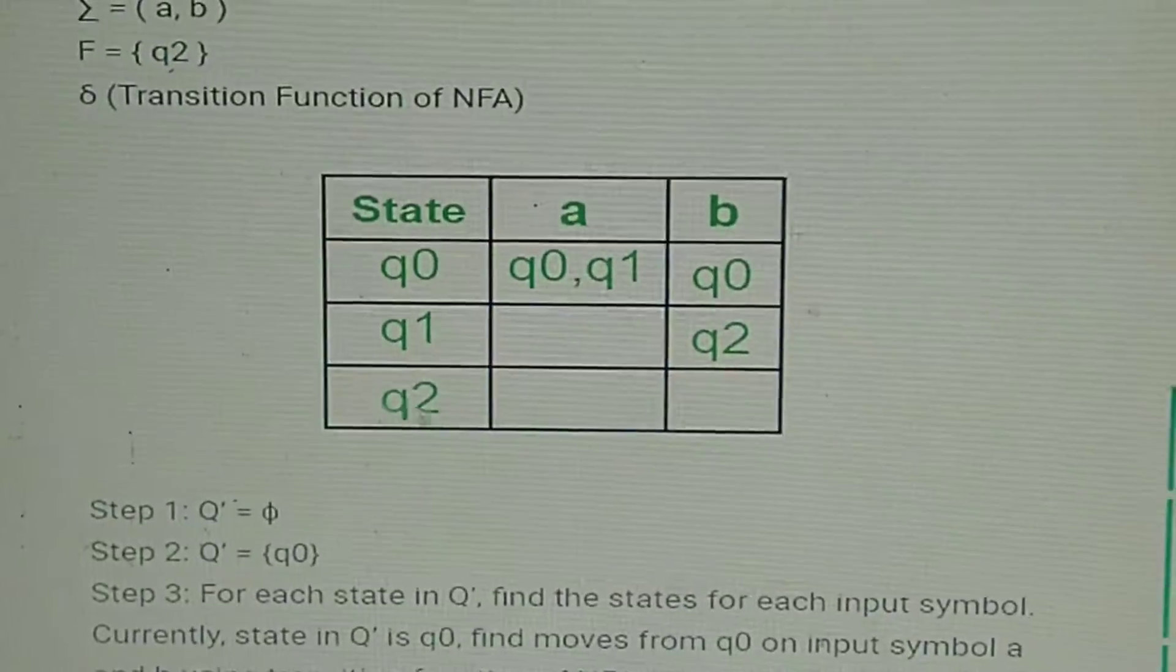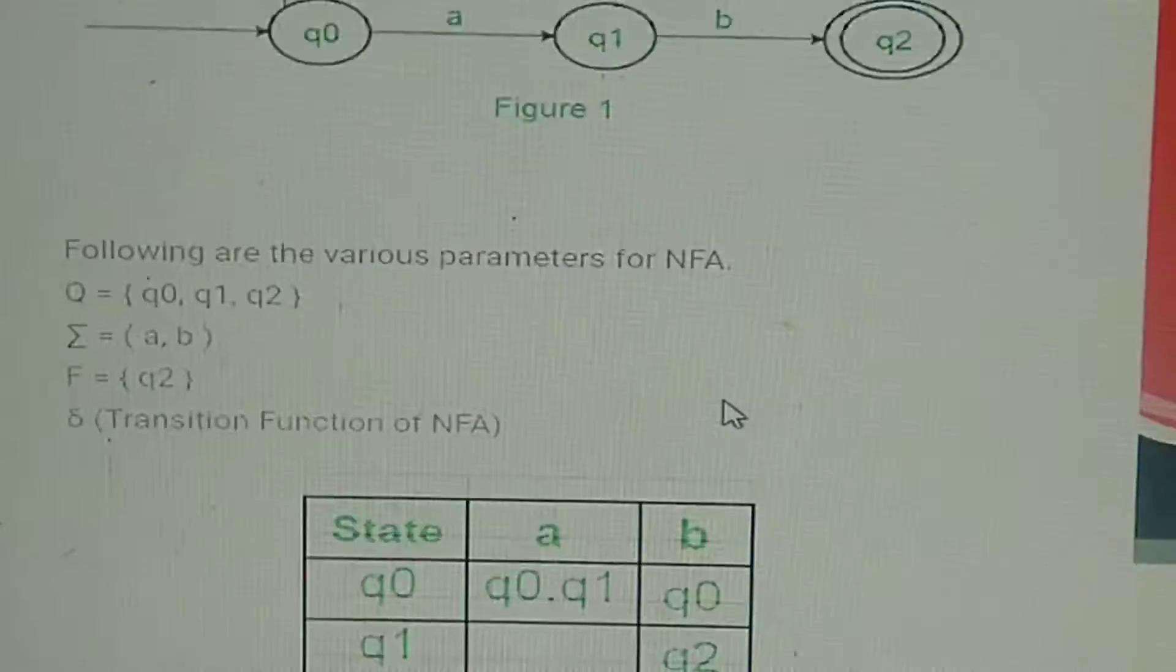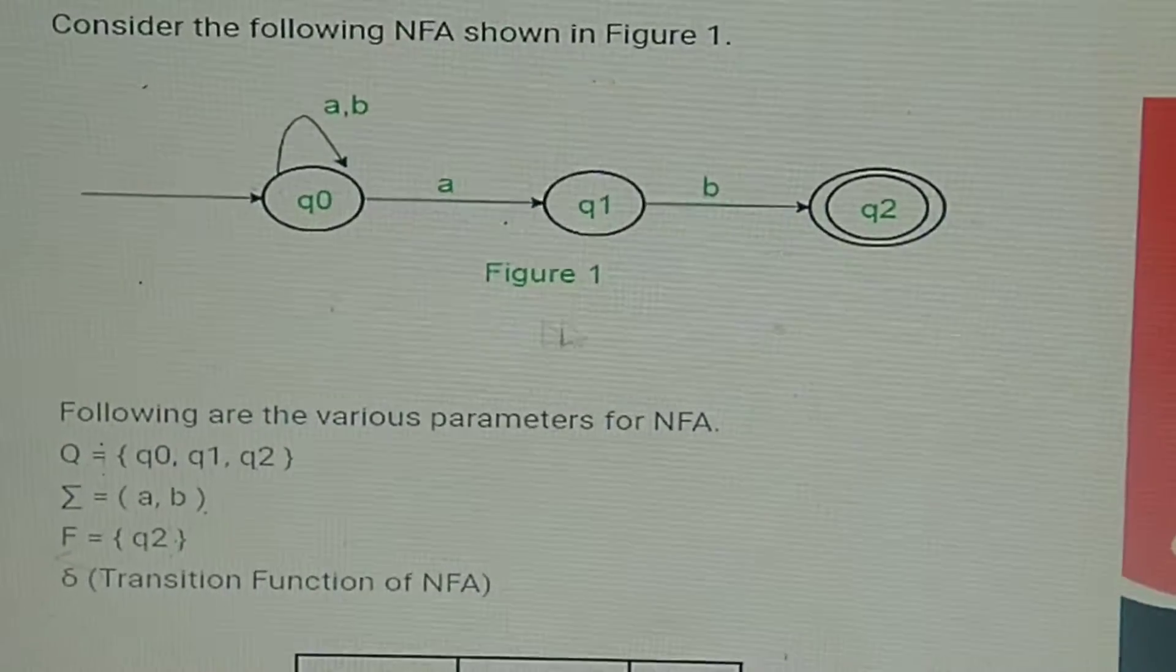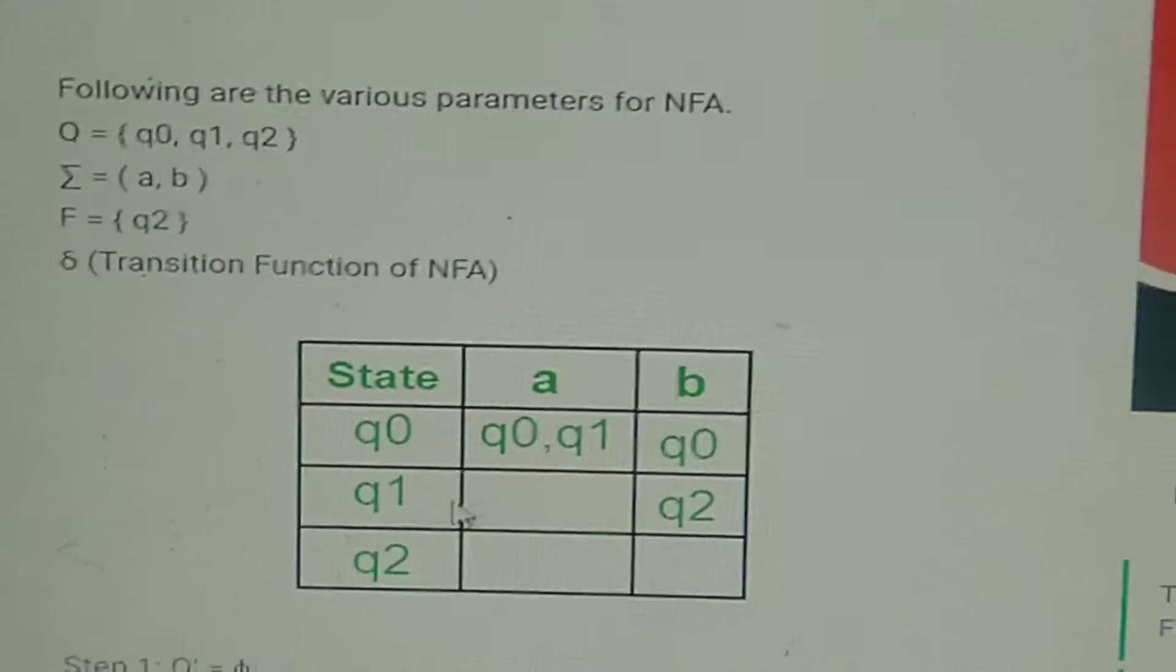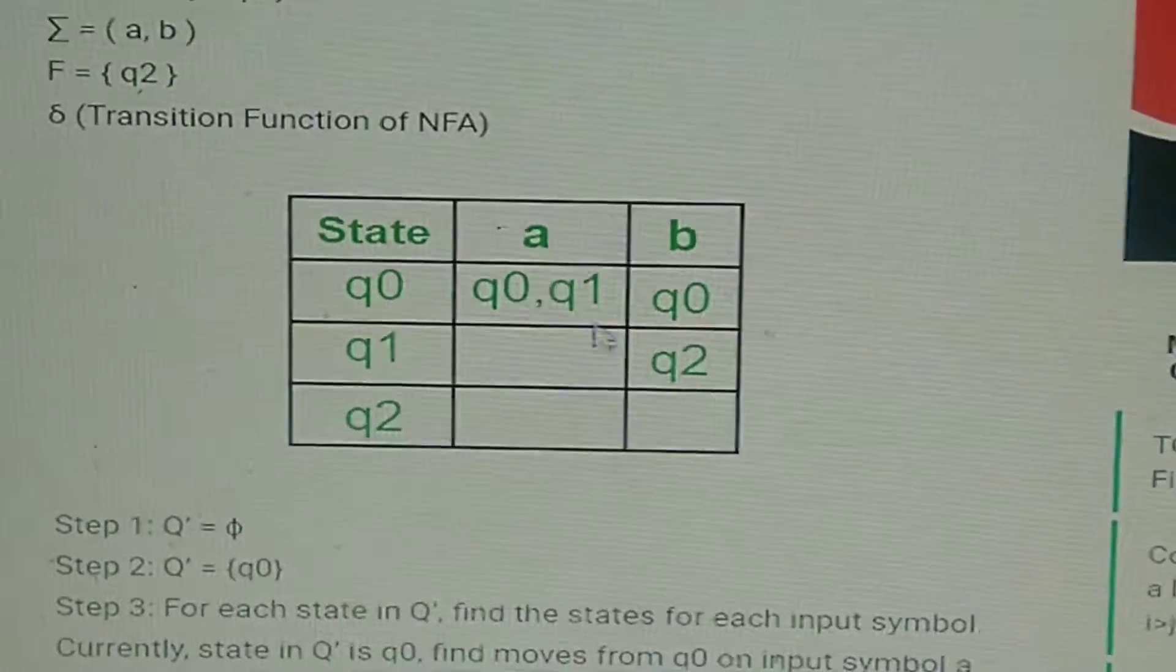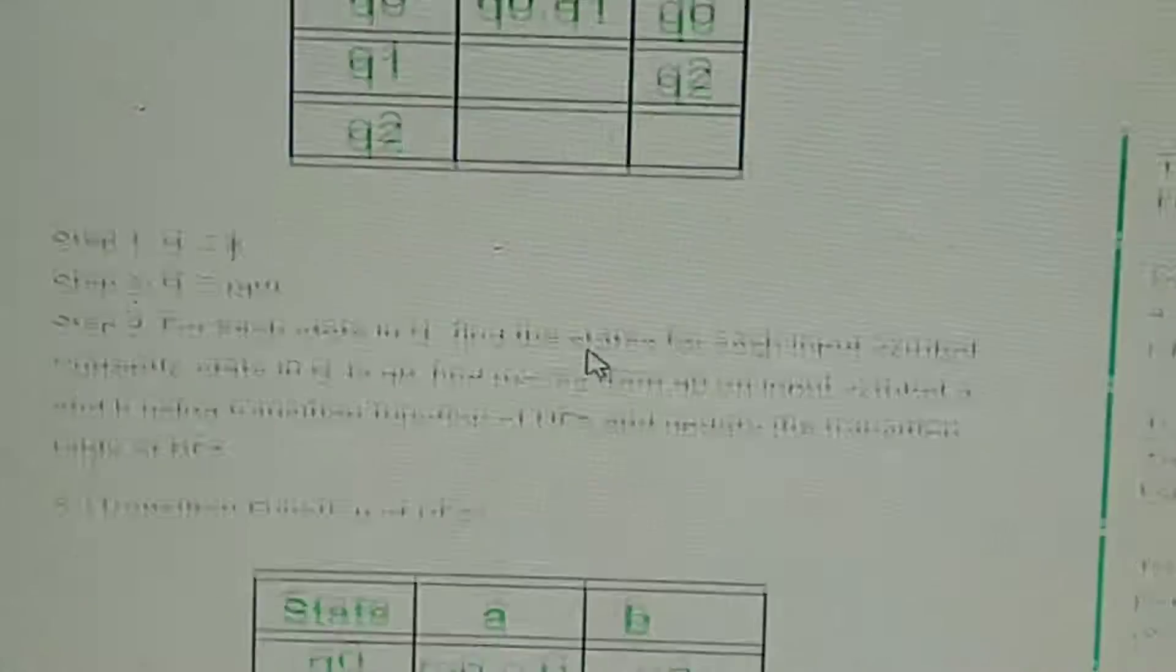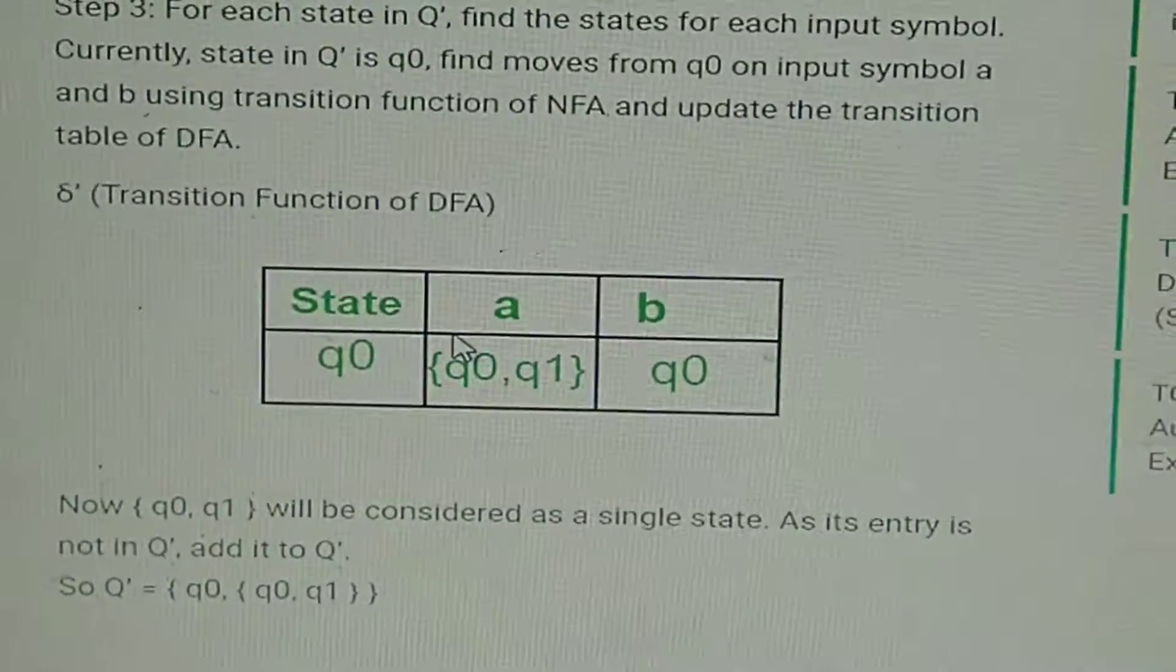This is the state transition table which has been constructed by this diagram. On giving 'a' to q0, it transits to q0 and q1, and similarly all these things. q2 is your final state. Now what we'll do is start from this state q0 and write in the new transition table whatever is the first tuple.